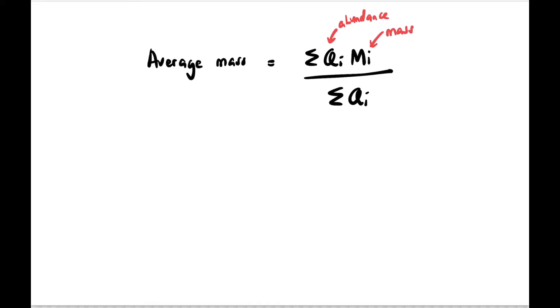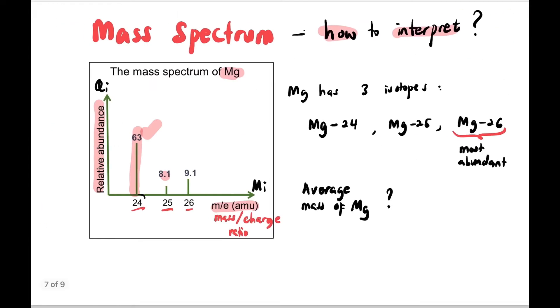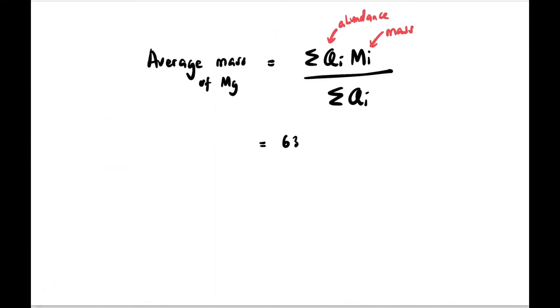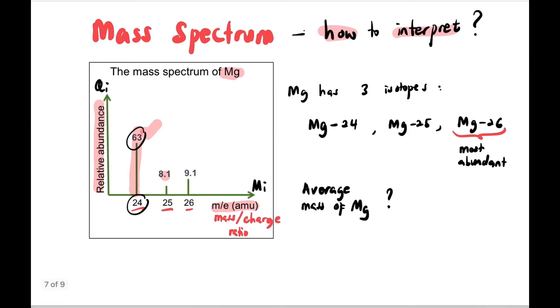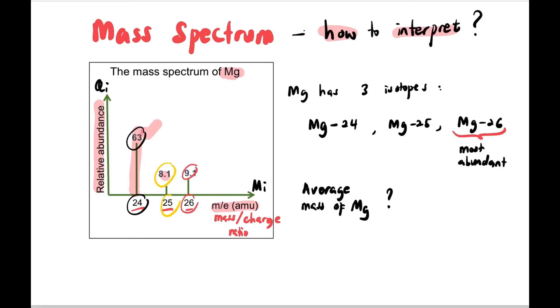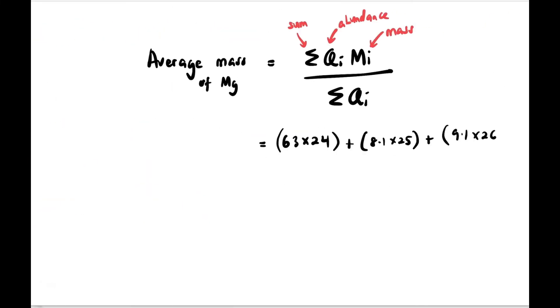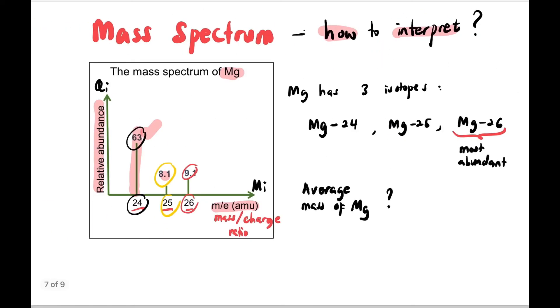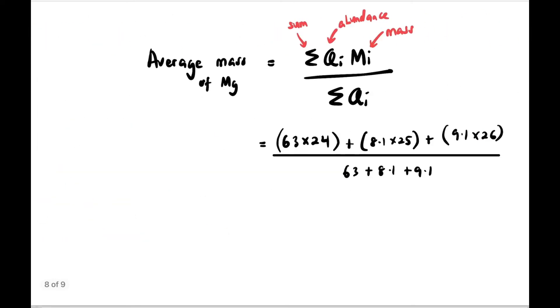Now let's look at the magnesium example. For mass 24, the isotope 24 has abundance 63, so 63 times 24. The second isotope 25 has abundance 8.1, so 8.1 times 25. And the third is 9.1 times 26.